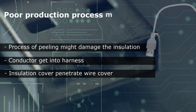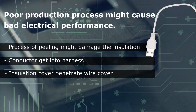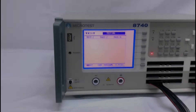A poor production process might cause bad electrical performance. The process of peeling might damage the insulation conductor, penetrate the wire cover, and get into the harness insulation cover.